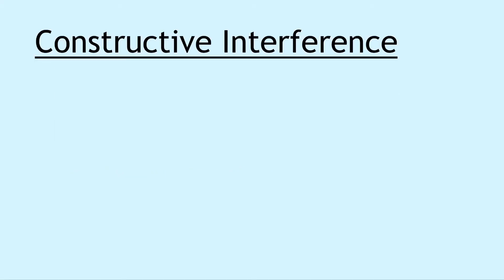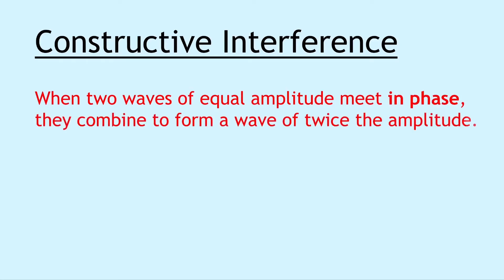Next we have constructive interference which says that when two waves of equal amplitude meet in phase, they combine to form a wave of twice the amplitude. And constructive interference will occur when a crest of one wave meets a crest of another wave or when a trough of one wave meets a trough from another wave.